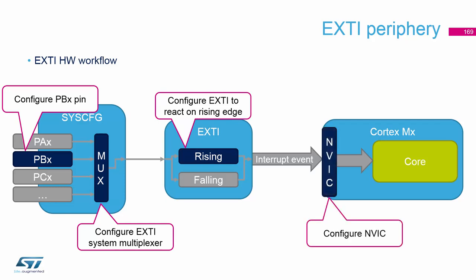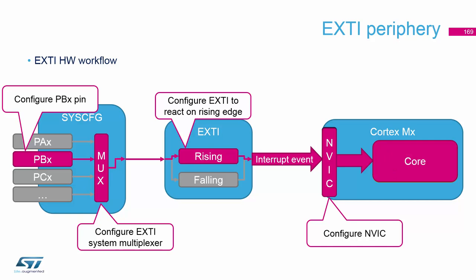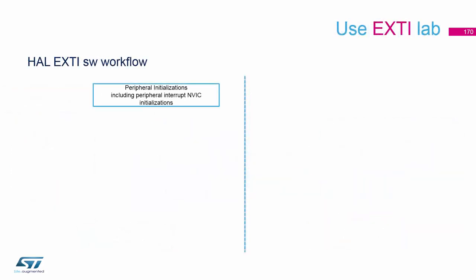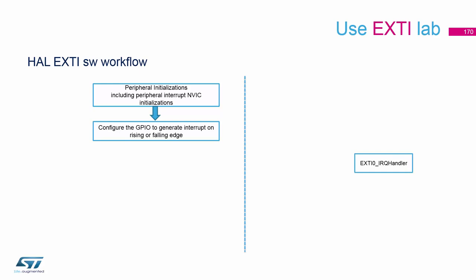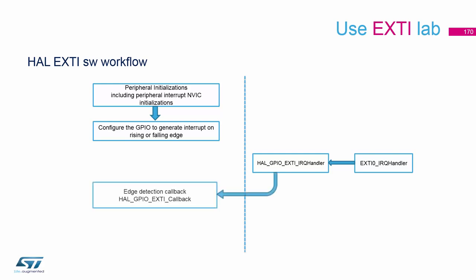You configure the EXTI to detect the rising edge of a signal, and we also configure the NVIC, which we do in our hands-on. Then the core is notified and processes the interrupt. In the code, we enable inside the NVIC the EXTI and GPIO, and when the interrupt occurs, we jump into the handler and call the HAL GPIO handler.